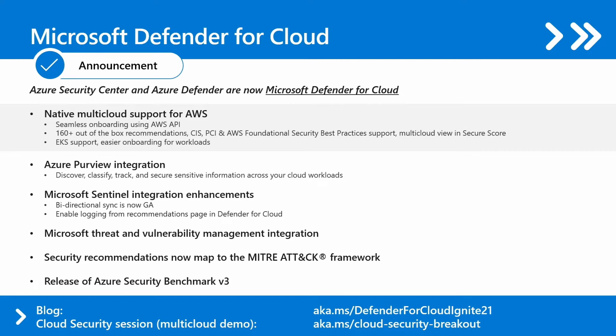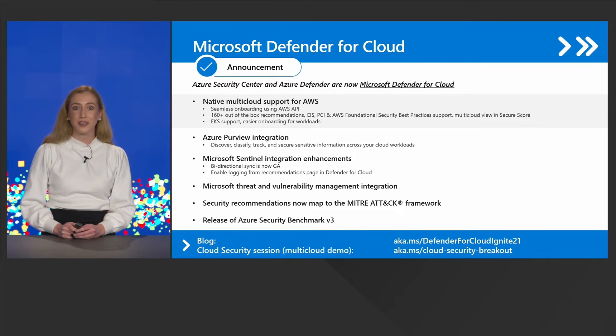The AWS support includes support for regulatory compliances such as CIS, PCI, and AWS Foundation Security best practices. We are also extending threat support for Elastic Kubernetes services and for EC2 instances. Having all the data in a cloud service could be a very targeted place for malicious actors. It's really important for customers to identify their sensitive data in the cloud, prioritize it, and ultimately secure it. This is why we are also announcing the Azure Purview integration, which will allow customers to label and secure sensitive data in cloud environments.